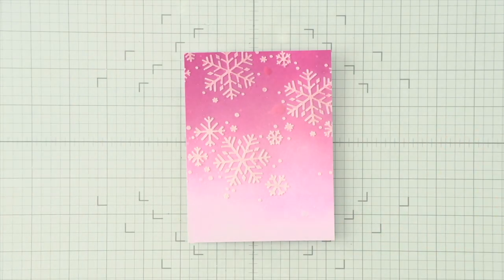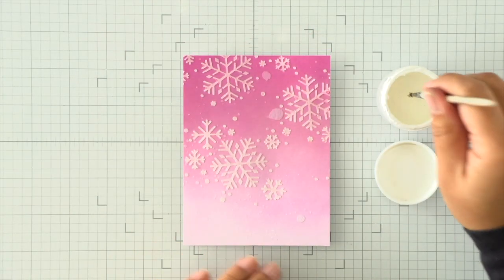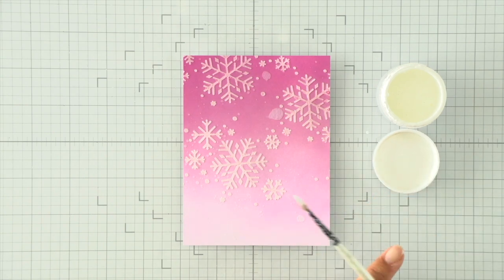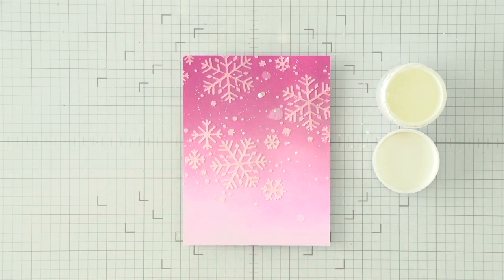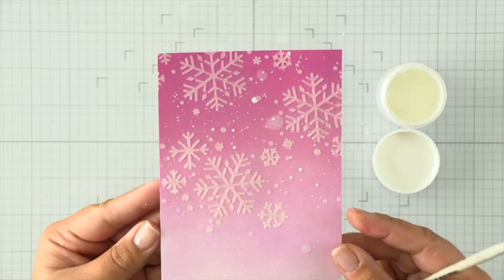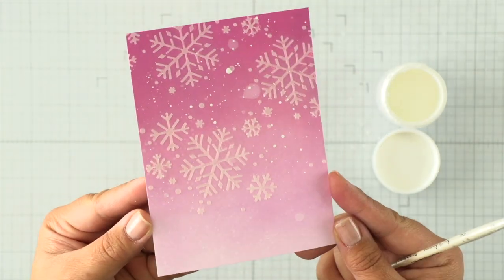I cut about a 1/8 inch sliver off on all of the sides. Then I spritzed it with water and now I'm splattering it with some white paint for some additional snow flurries. This paint is going to dry super quick.